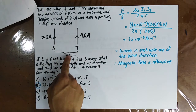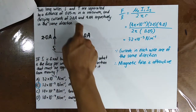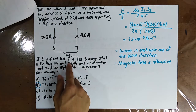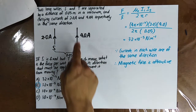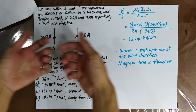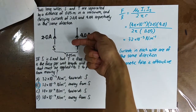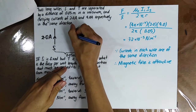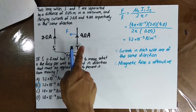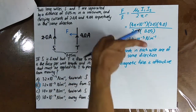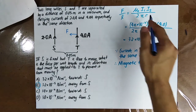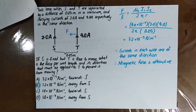Two long wires S and T are separated by 0.05 m in vacuum, carrying currents of 2 A and 4 A respectively in the same direction. If S is fixed and T is free to move, what force per unit length must be applied to T to prevent it from moving? Since the currents are in the same direction, they attract, so the attractive force on T is toward S. To prevent T from moving, your applied force must be directed away from S. Use F/L = μ₀I₁I₂ / (2πR) to find the magnitude.